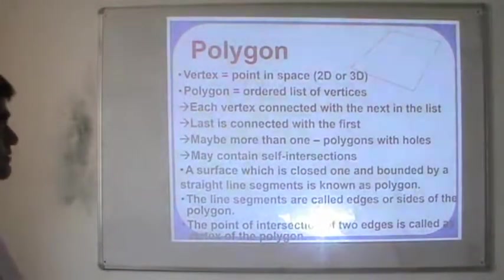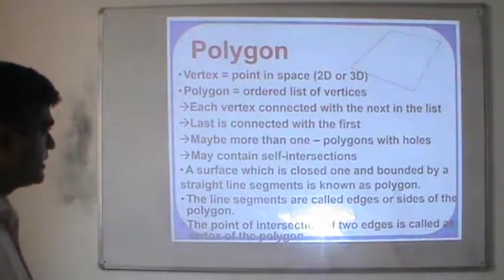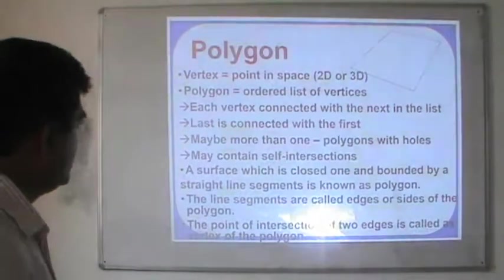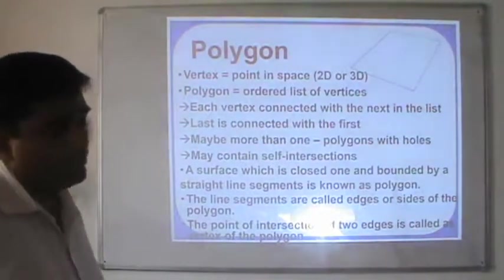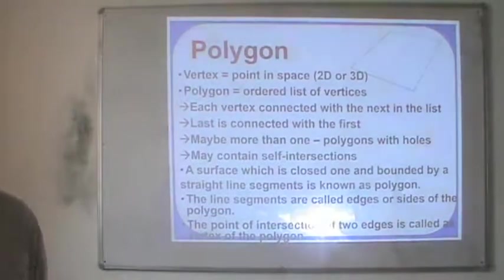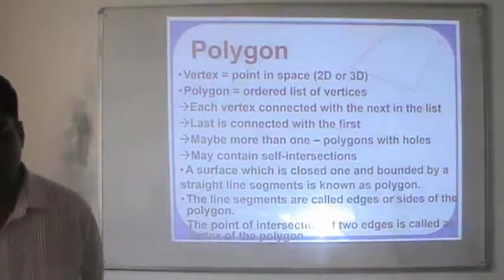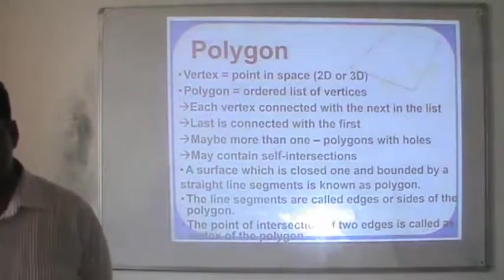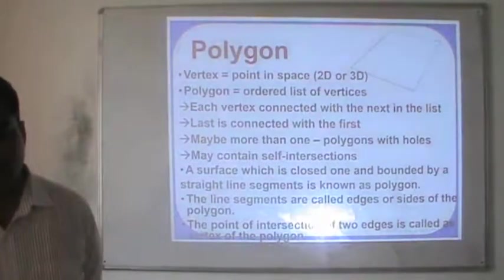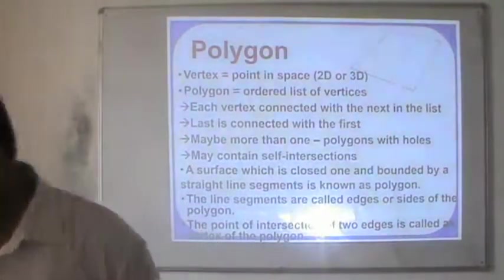Polygon has vertices, that is points in space, either in two dimensions or in three dimensions. A polygon is an ordered list of vertices, each vertex connected with the next in the list, and the last is connected with the first. Because if you want to draw a polygon, the last point must be connected with the first one. A surface which is closed and bounded by straight line segments is known as a polygon.